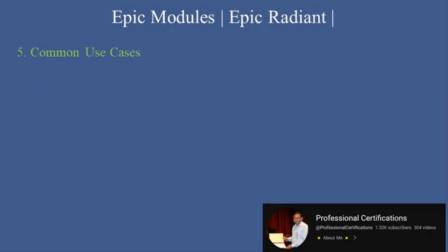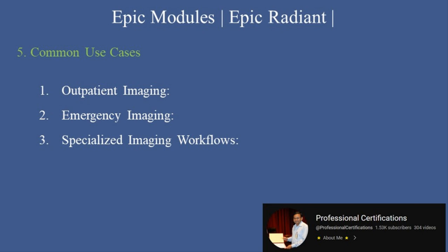Common Use Cases — EPIC Radiant is ideal for managing: 1. Outpatient Imaging — streamlines scheduling, imaging, and reporting for outpatient diagnostic studies. 2. Emergency Imaging — facilitates rapid ordering and interpretation for critical cases in the ED. 3. Specialized Imaging Workflows — supports workflows for advanced modalities like MRI, CT, and nuclear medicine. 4. Quality Assurance Programs — tracks peer review and reporting accuracy to ensure high standards.